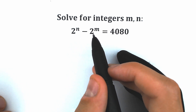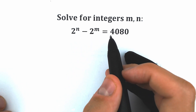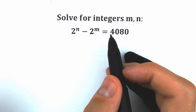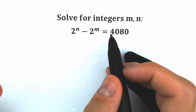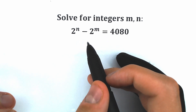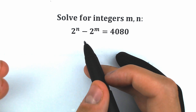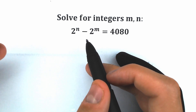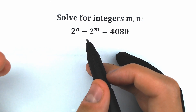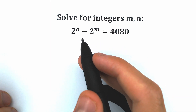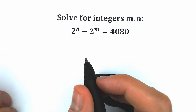2 to the power n minus 2 to the power m equal to 4080. A lot of students might be saying, hey mister, I can easily solve this question in 10 seconds, I can easily find this n and m. And in the same way there are a lot of programmers who can easily solve this question in 3 seconds. I agree with it, but on this channel I'm going to show you how to solve this type of question mathematically, algebraically.